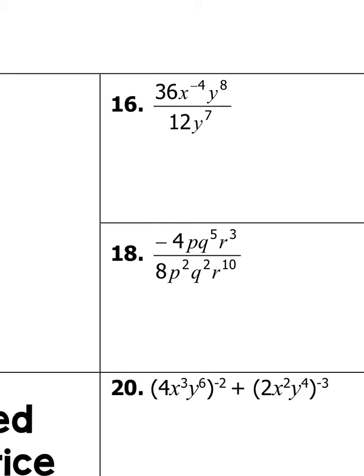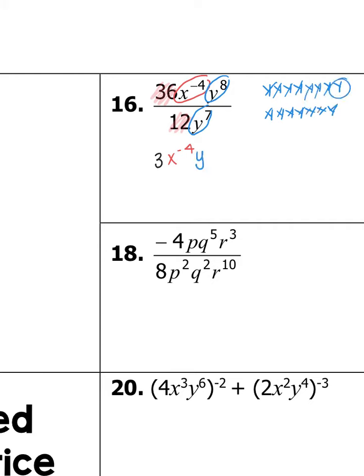For number 16, it says 36x to the negative fourth, y to the eighth, all over 12y to the seventh. We do 36 divided by 12, which gives us 3. There isn't an x on the bottom, so that stays as x to the negative fourth. Then y to the eighth on top and y to the seventh on bottom: 8 minus 7 leaves one y on top. We leave 3y on top because those are positive, but x to the negative fourth comes down to the denominator and becomes positive. That is your answer to number 16.